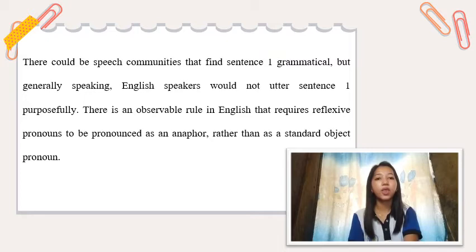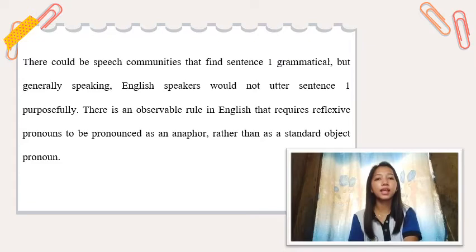The word 'me' is used when it's the object of a sentence — that is, who or what is receiving the action. For example: 'The boss gave Kaila and me a promotion.' The subject there is 'the boss,' while the object is 'Kaila and me' because they are the ones who receive the promotion.